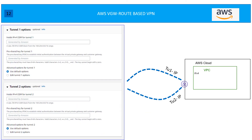For Tunnel 1 and Tunnel 2 IP addresses: for route-based VPN you need to configure two tunnels. AWS gives you the option to use AWS default settings or edit them. For the tunnel IP addresses, AWS generates a /30 IPv4 CIDR block from the 169.254.0.0/16 range. The pre-shared key is also generated by AWS, but you have the option to use your own range and your own pre-shared key. The same options are available for Tunnel 2.